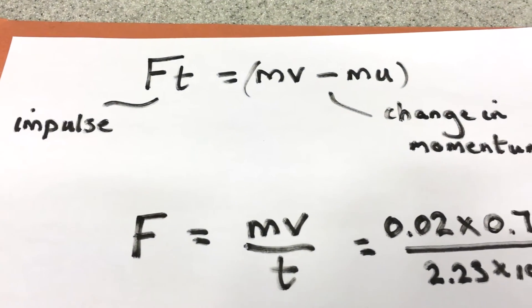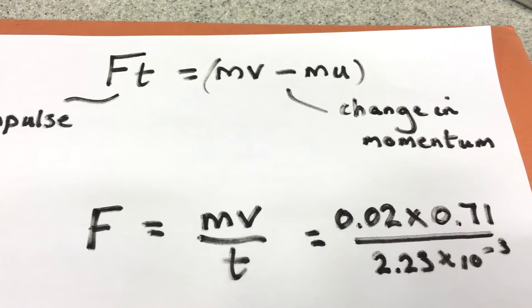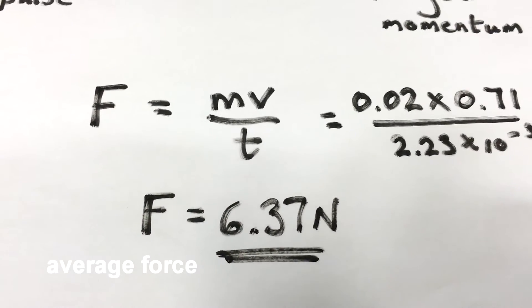We can rearrange that. F equals mv over t. There's our results. And there's the force on the ball.